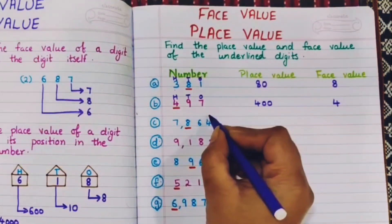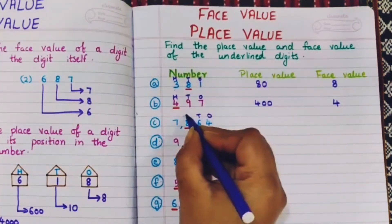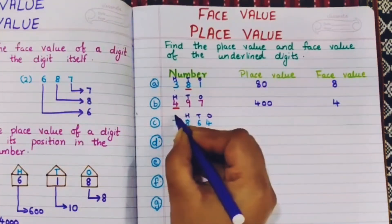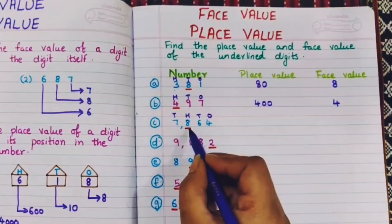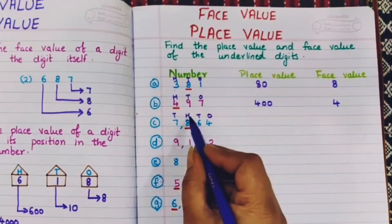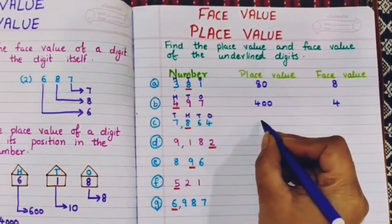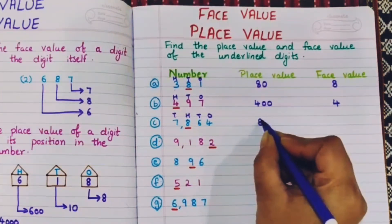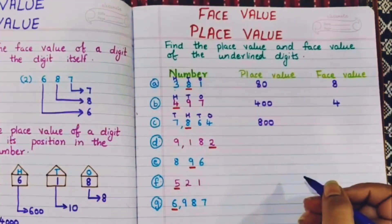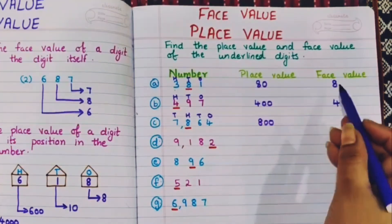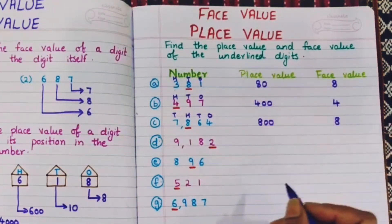Next, 7864. Positions: ones, tens, hundreds, thousands. 8 is in the hundreds place, so the place value is 800. The face value of 8 is 8 itself.